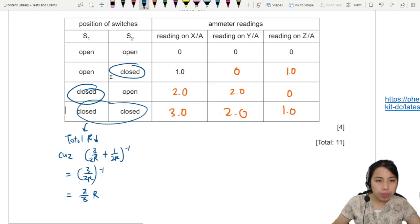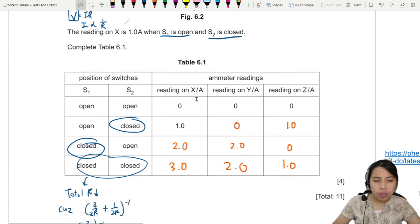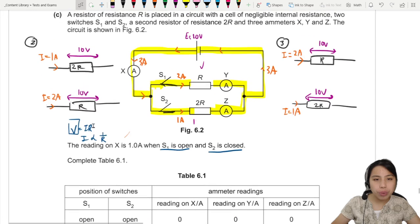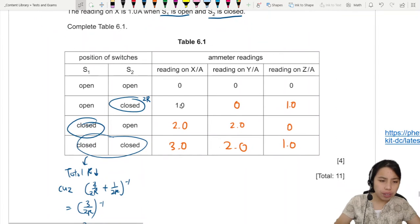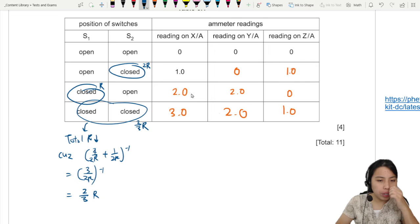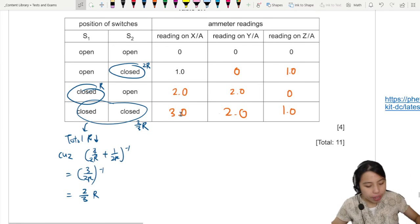The first one when you close S2 is where? 2R. So this one, only the 2R resistor is used. For S1, only the R resistor is used. But when you close both, your total resistance is only 2 over 3R. So total current should be increased. So that's why we go to 3 amps in total.